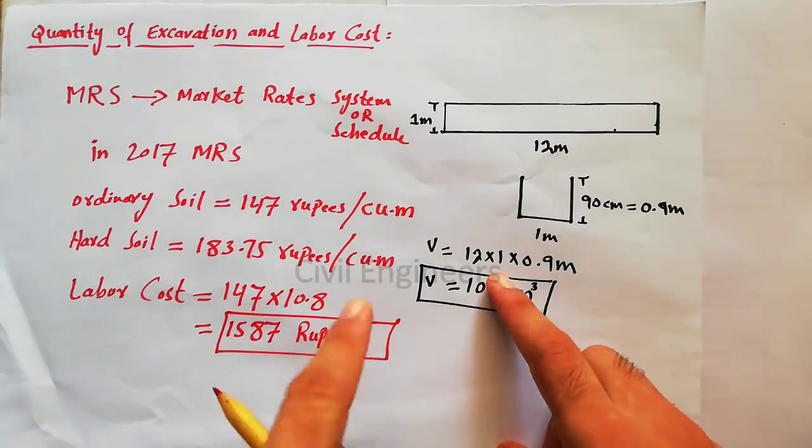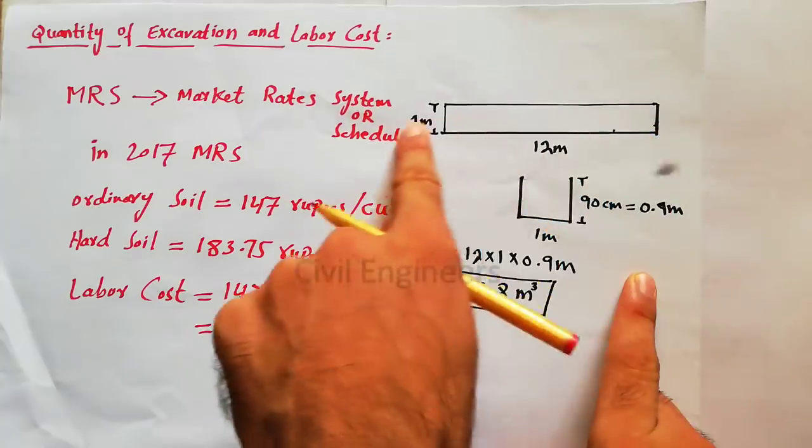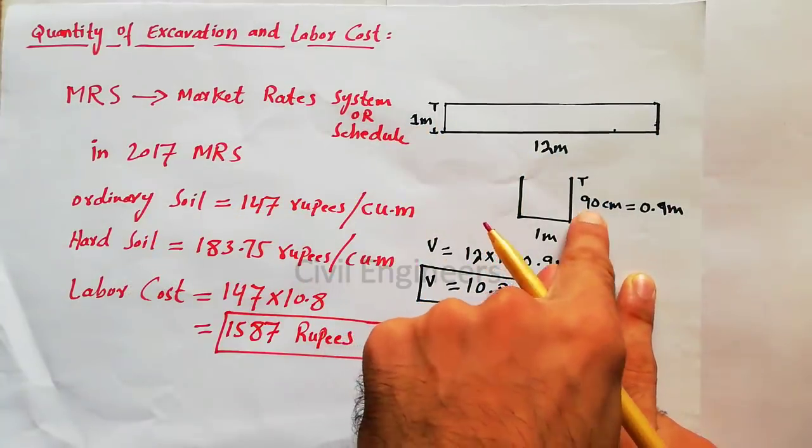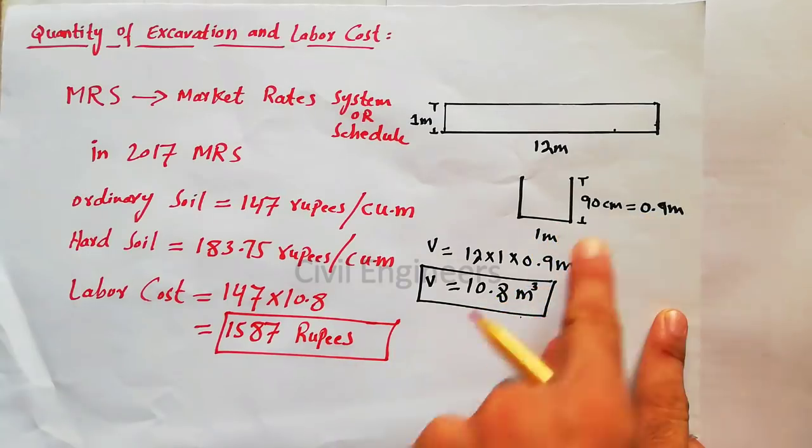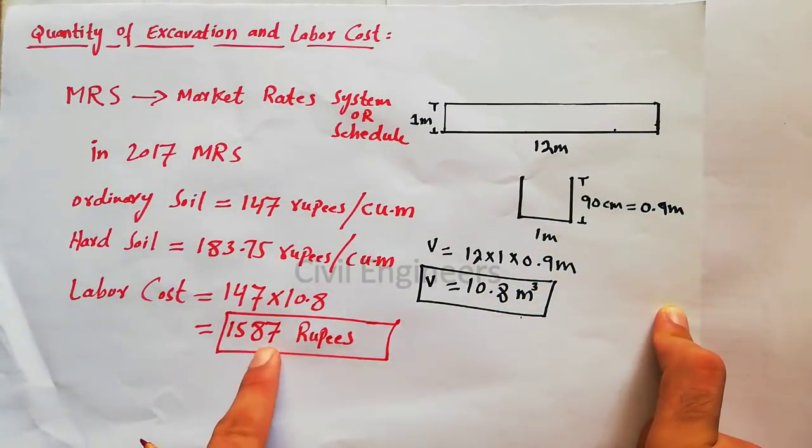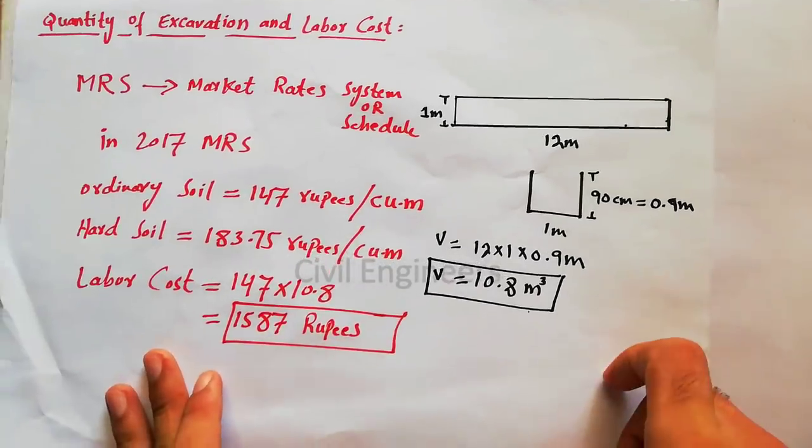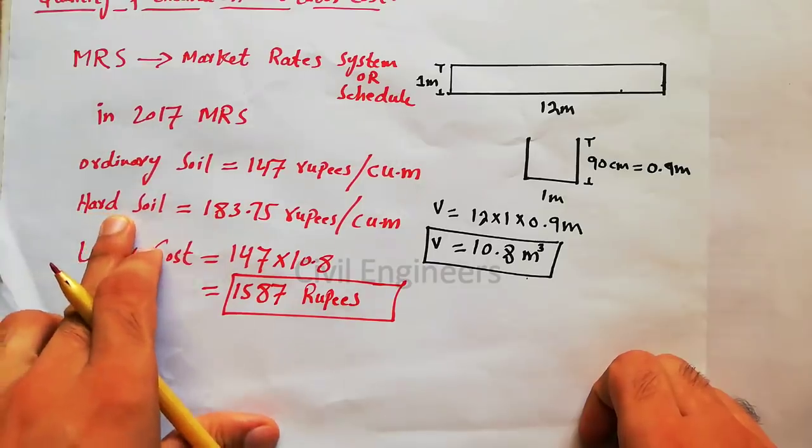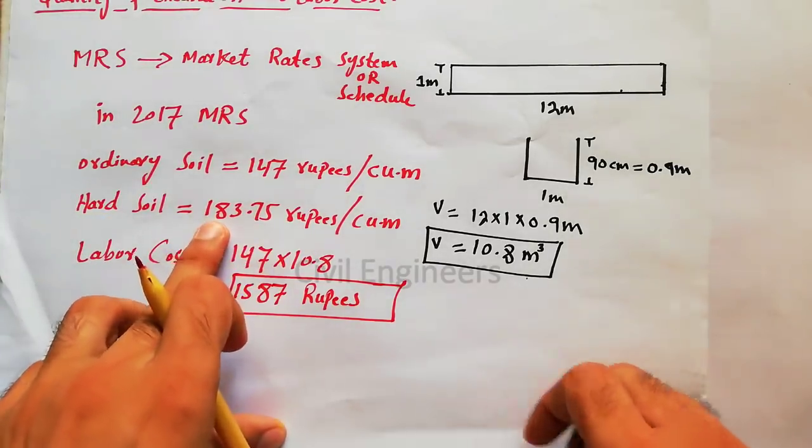So we have to pay the labor if they provide this foundation which length is 12 meters, width is 1 meter, and depth is 90 centimeters or 0.9 meters. So for ordinary soil we have to pay 1587 rupees for labor.